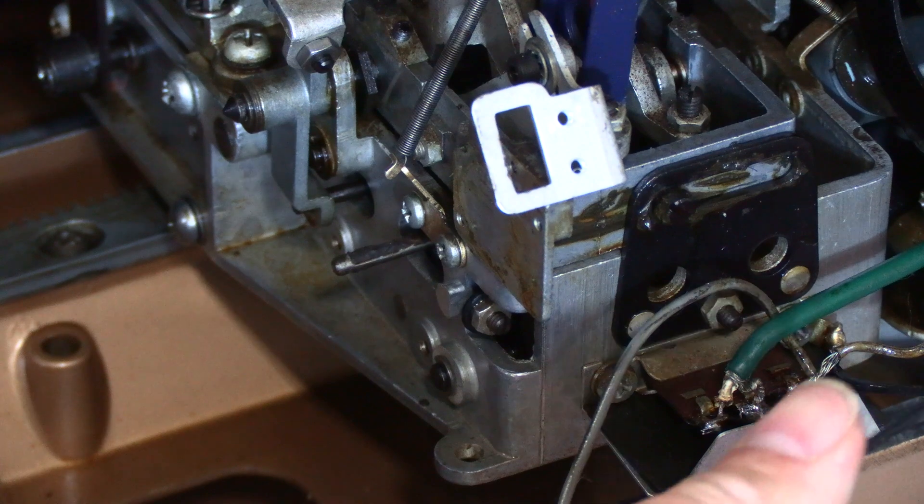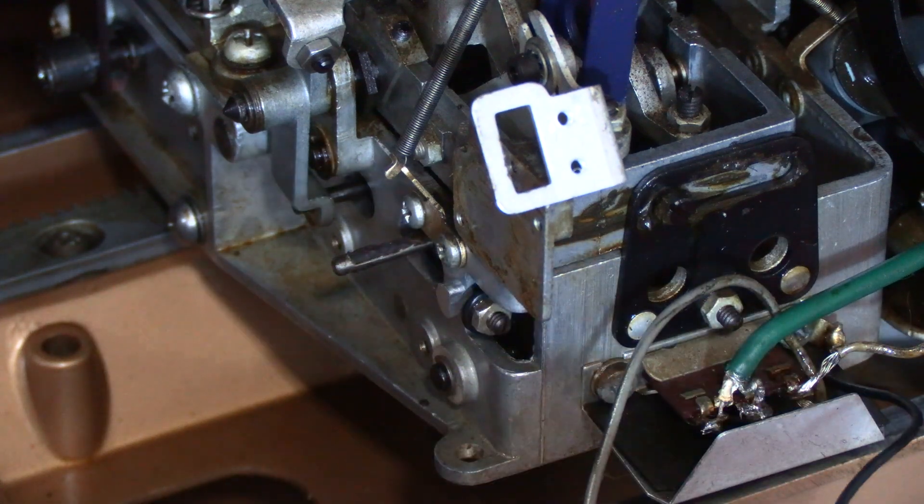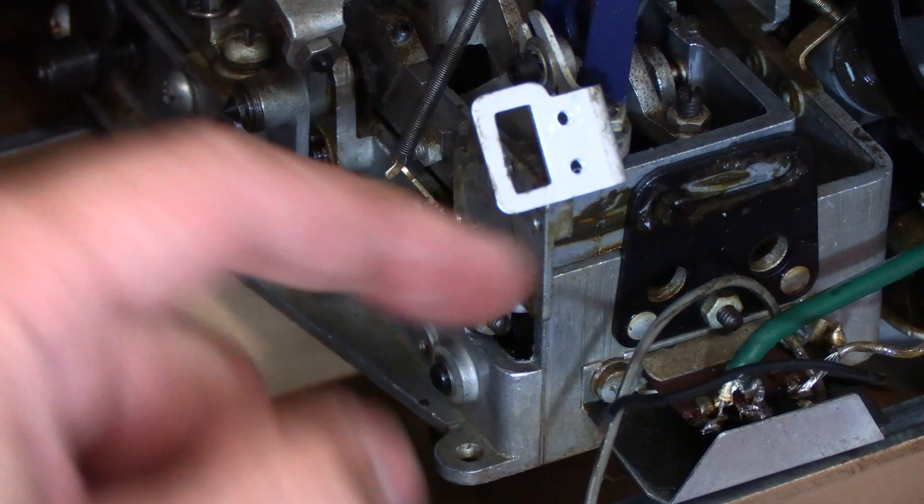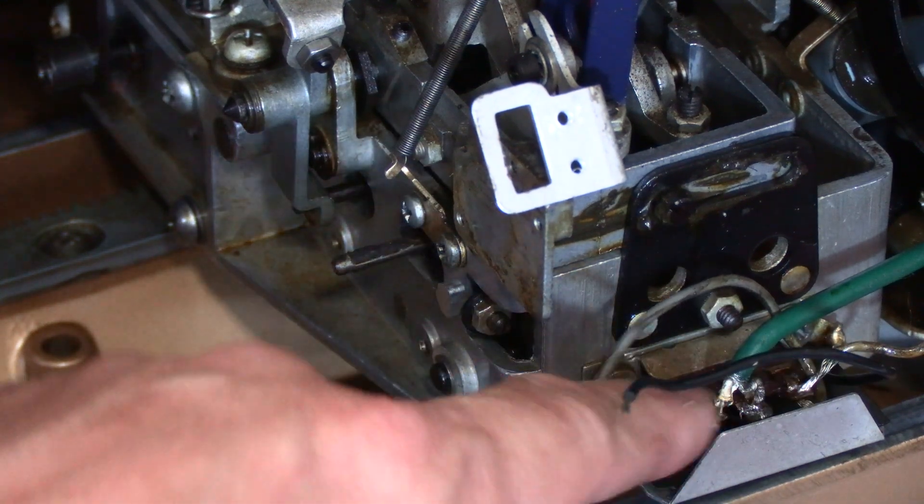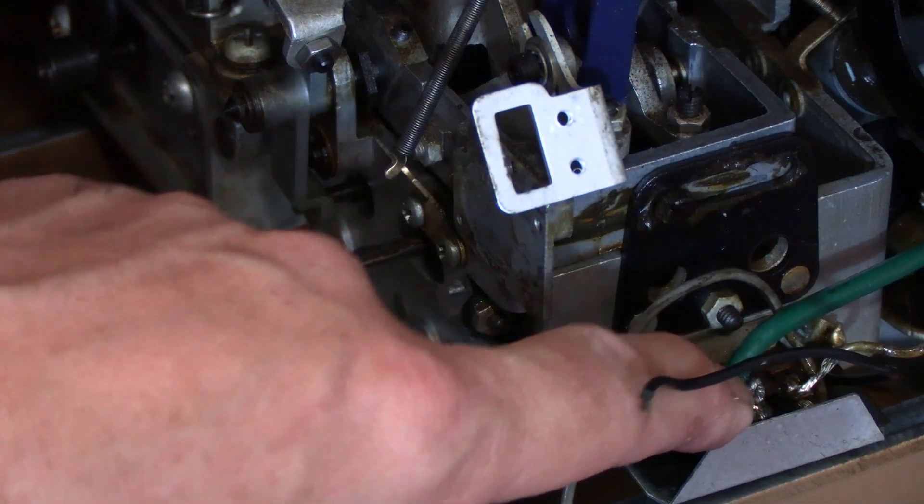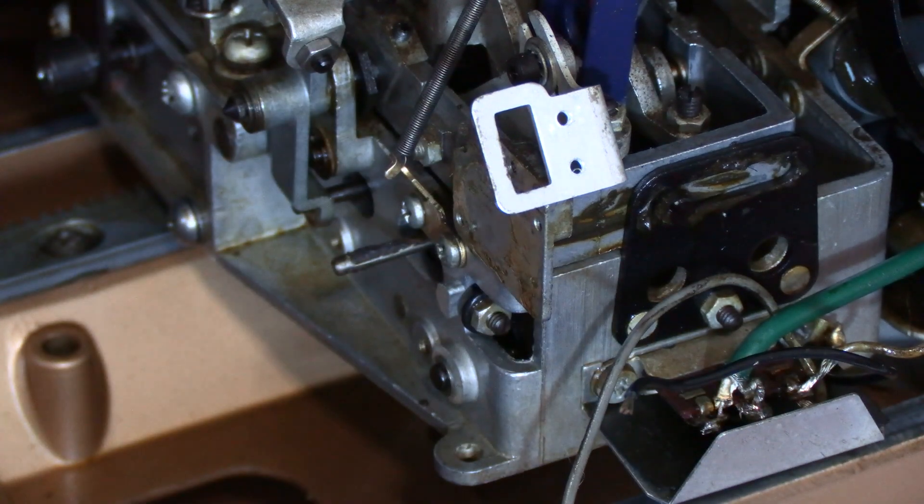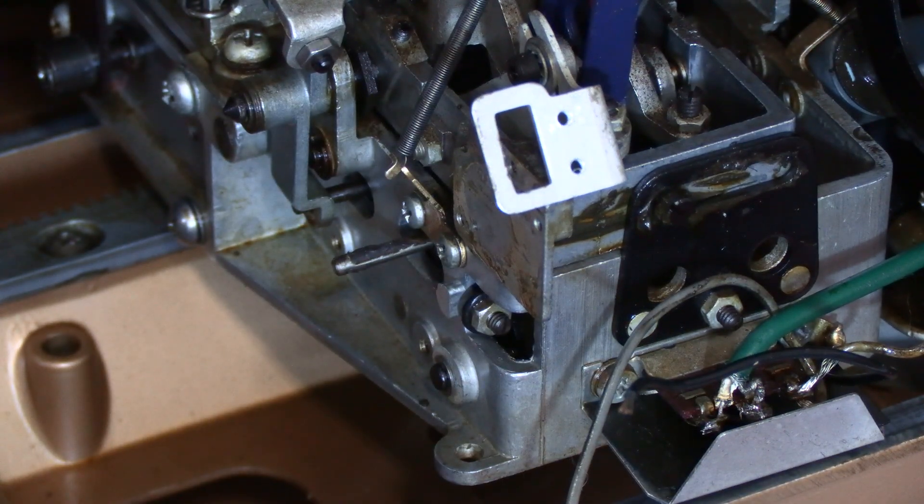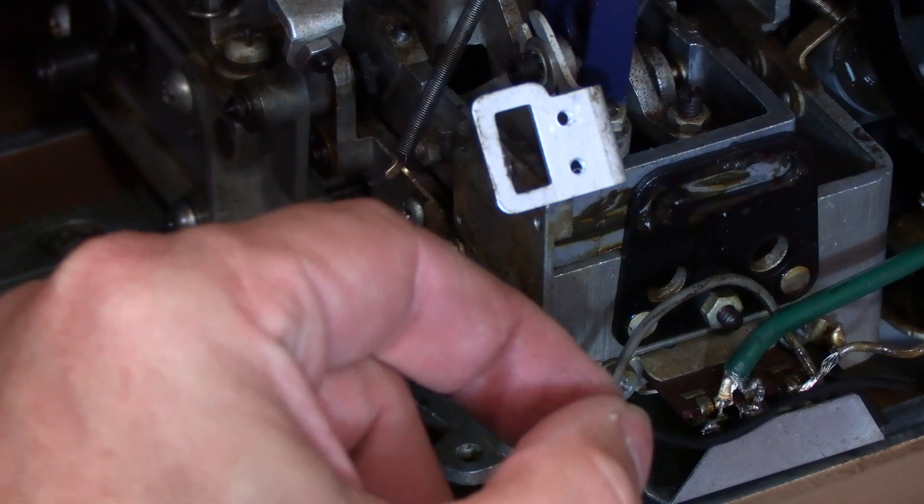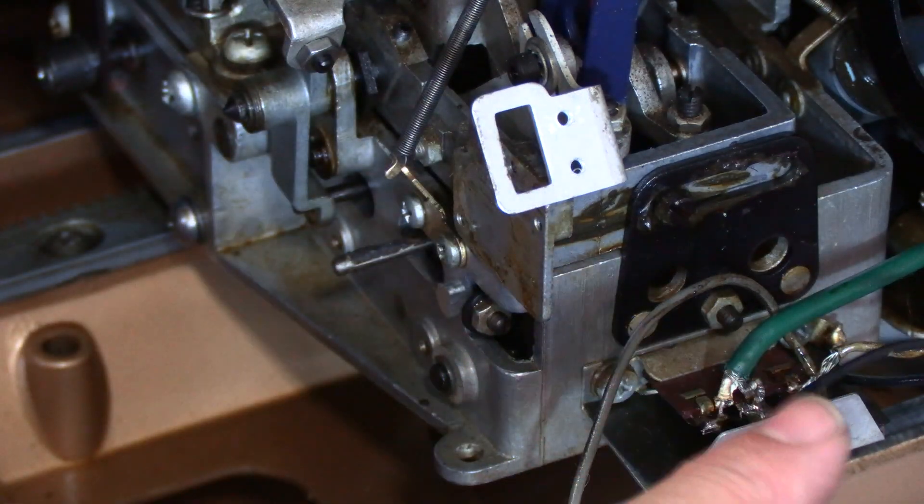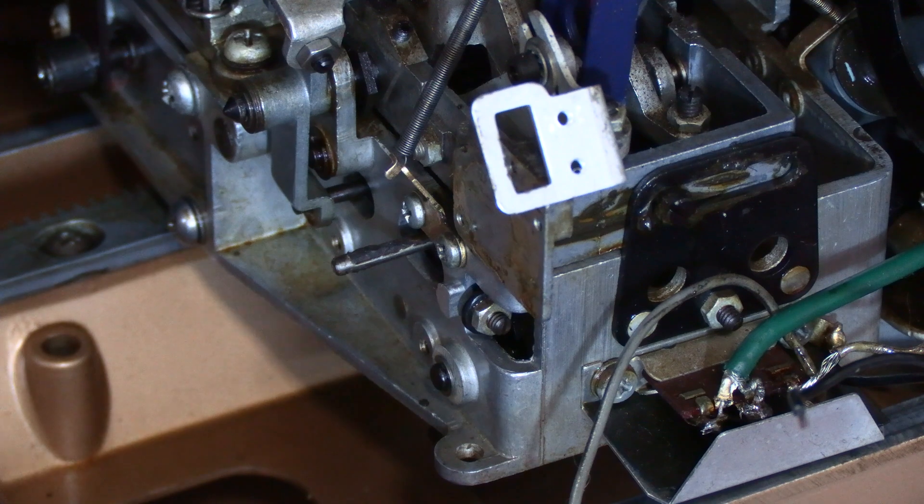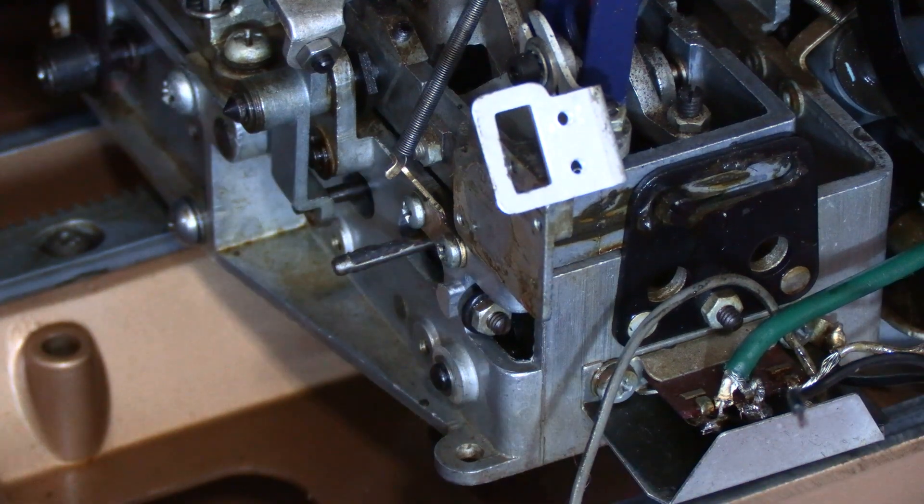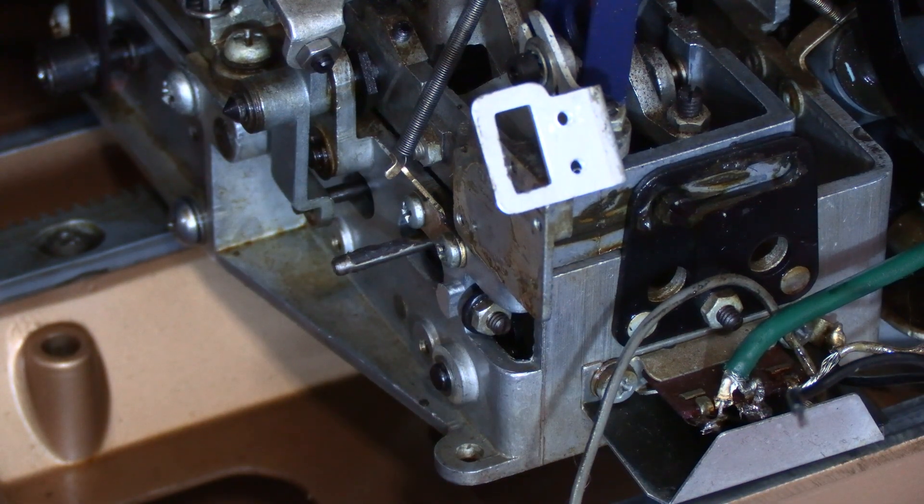Now one thing I should mention is that a common mistake that we've seen in a lot of jukeboxes is previous repairmen have tied the ground wire to the audio ground, which is incorrect, right here in the shield of the audio ground. That is not correct, so if your machine makes a popping sound when rejecting the records, take a look at that while you're in there because there's a chance that somebody may have incorrectly tied it onto the ground shield of the audio instead of the lug on the mechanism. So something to check as you're working on this.